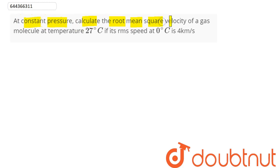Question is: At constant pressure, calculate the root mean square velocity of a gas molecule at temperature 27 degrees Celsius if its RMS speed at 0 degree Celsius is 4 kilometer per second.